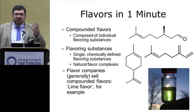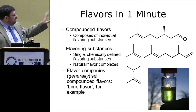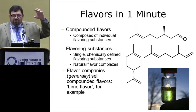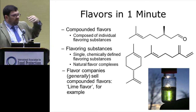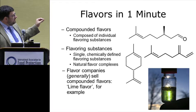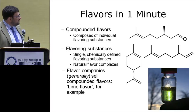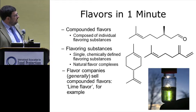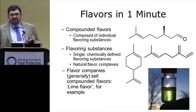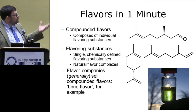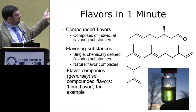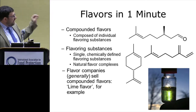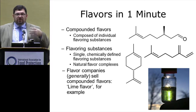When we talk about strawberry flavor, lime flavor, anything — we're really talking about compounded flavors. Compounded flavors are bottles, jars, or 55-gallon drums composed of a plethora of individual flavoring substances. Individual flavoring substances are typically either single chemically-defined flavoring substances — like citronellal, myrcene, and limonene — or natural flavor complexes, which are very complex mixtures. Flavor companies traditionally sell compounded flavors, for instance a lime flavor, which end up in consumer products.